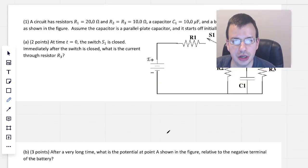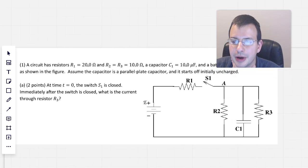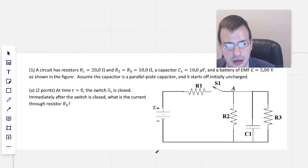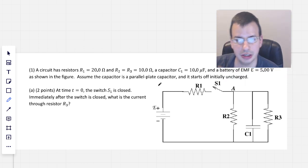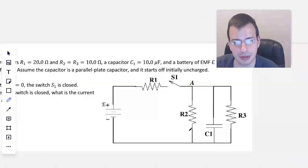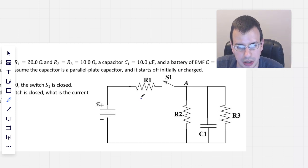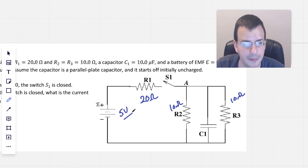A circuit has resistors of 20 ohms, 10 ohms, and another 10 ohms, a 10 microfarad capacitor, a battery, as shown in the figure. Writing these in: 20 ohms, call this 10 ohms, call this one 10 ohms, and this will be 5 volts.